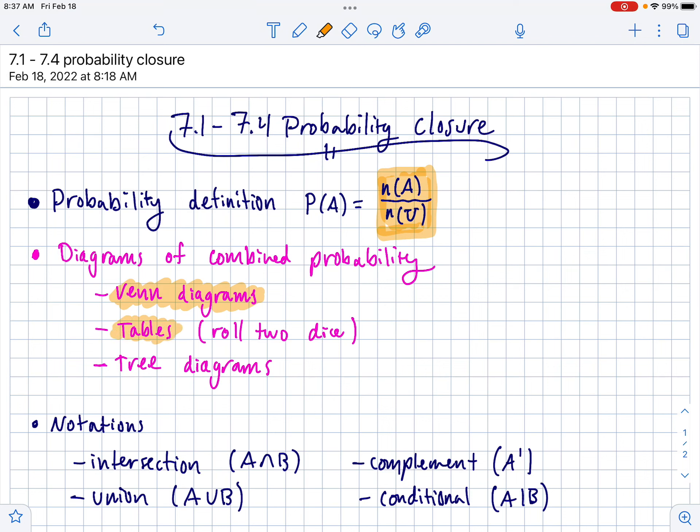We also did certain problems where maybe a table was appropriate to list out all the different ways the problem can happen. The main thing I think of is the roll two dice problem, where you put out one roll across the top and the other here.